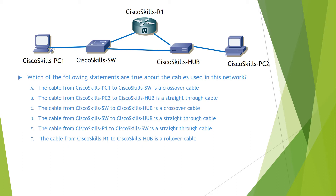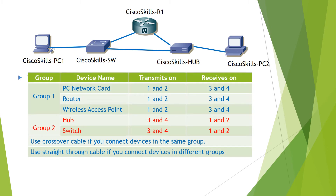To answer this question, we need to remember this table. Basically there are two groups: Group 1 contains PC, router, and wireless access point; Group 2 contains hub and switch. If you connect devices in the same group, use a crossover cable. If you connect devices in different groups, use a straight-through cable. So these are the straight-through cables and this is a crossover cable.